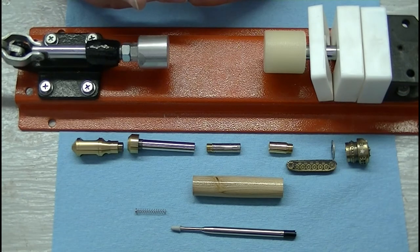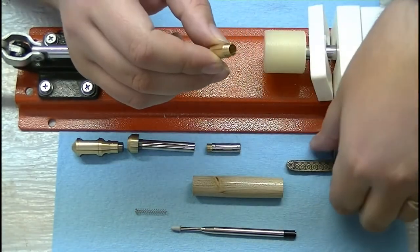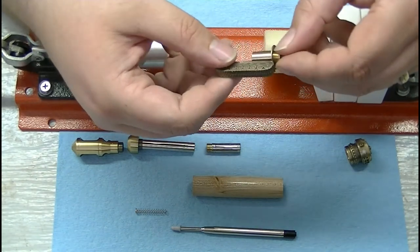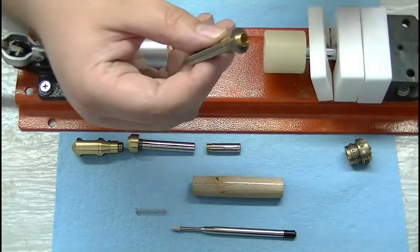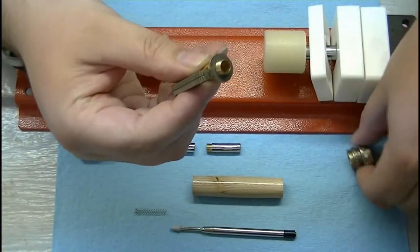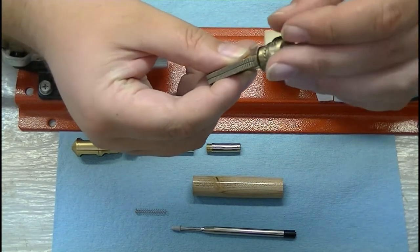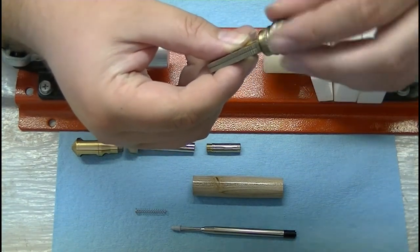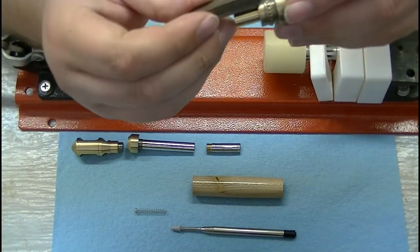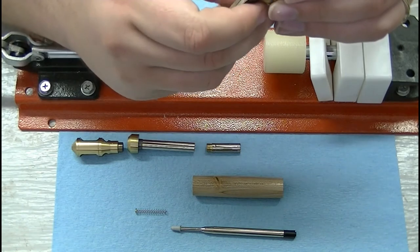We first start off by placing the clip onto the cap nut. So we take our clip and our cap nut, slide that in there just like so, and then we thread on our cap just like this. So that's all held in place just like that.